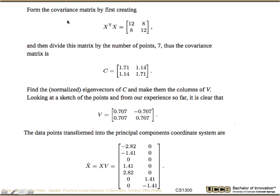So here's our solution. To find the covariance matrix, we first create X transpose X, that gives me [12, 8; 8, 12]. And from this, I'm going to divide this by the number of points, 7, so that I have the average. This gives us the covariance matrix C of [1.71, 1.14; 1.14, 1.71]. We're now going to find the normalized eigenvectors of this. Again, we need them to be normalized. So after we find them, we want to make sure that they're of unit length. And then if you actually draw this, you'll see that this is actually consistent. V is now basically rotation by 45 degrees.